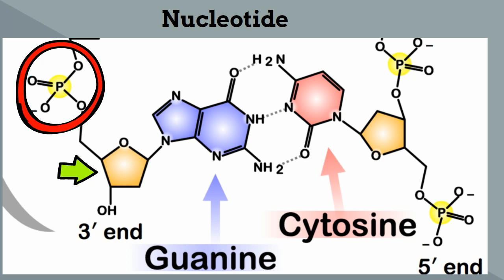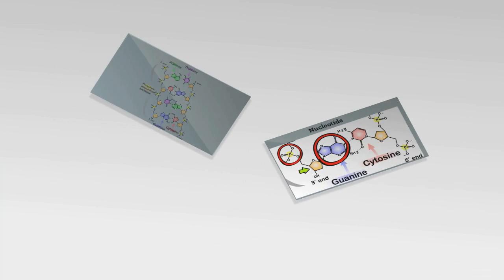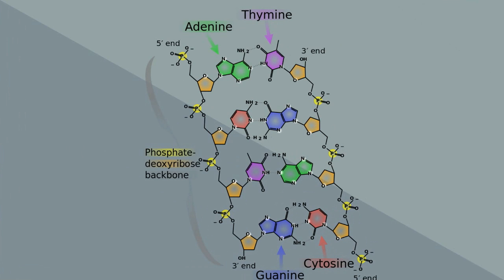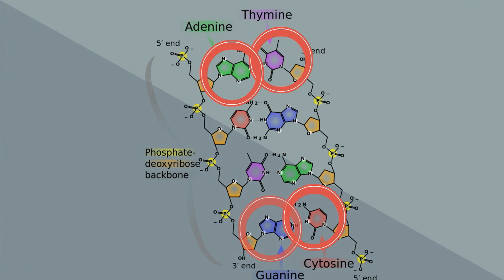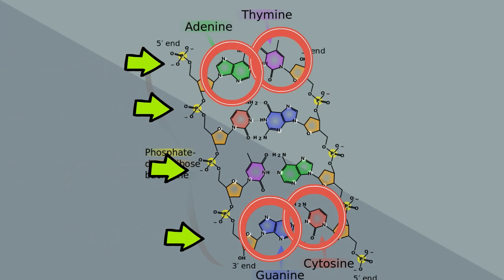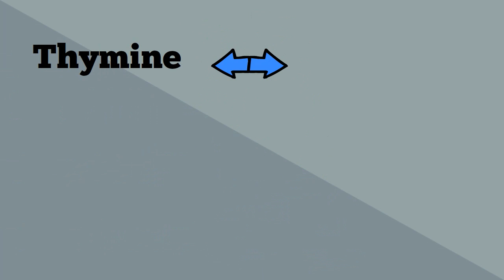And then you have four nitrogen bases. The four bases are thymine, adenine, cytosine, and guanine. The sugar and phosphate make up the backbone. The sugar is bonded to the nitrogen base.